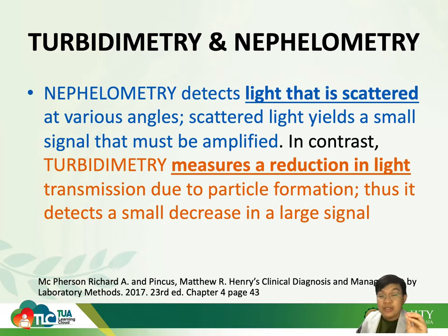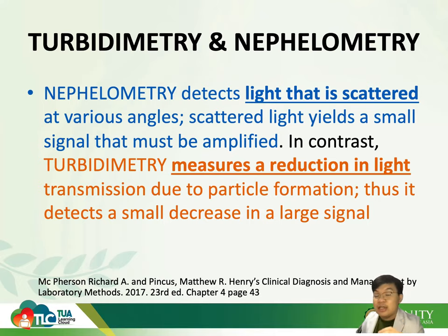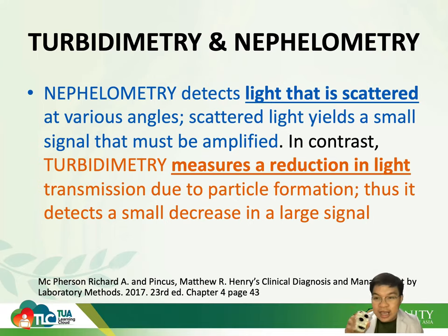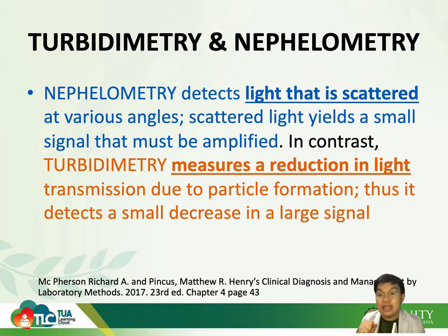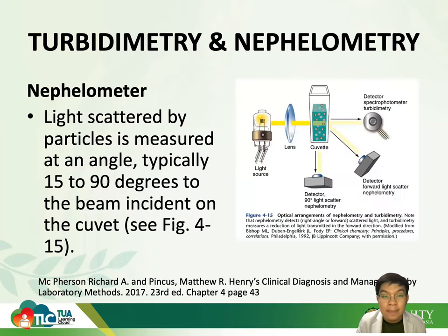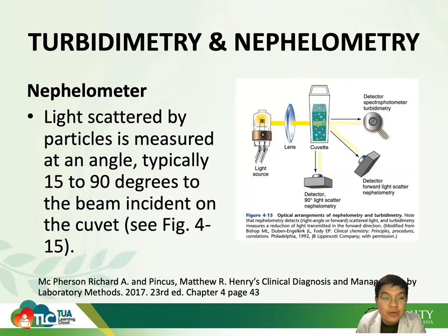In contrast, when we talk about turbidimetry, we're simply measuring the reduction of light. It measures the reduction of light transmission due to particle formation, thus it detects a decrease in the large signal. To go back to my flashlight example: the light being blocked, or the reduction in the light, is what is being measured in turbidimetry.